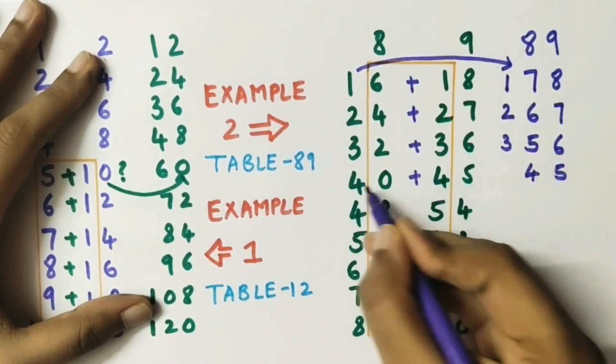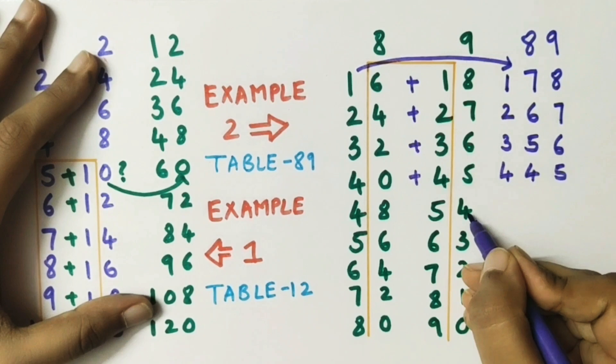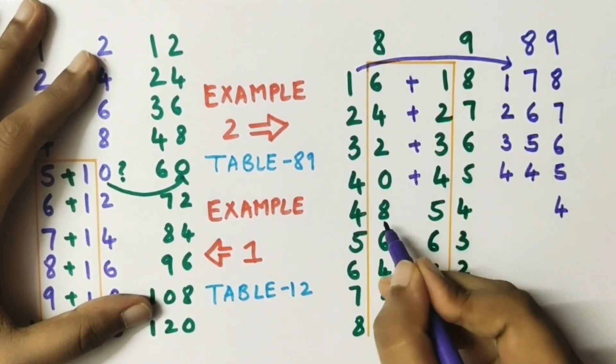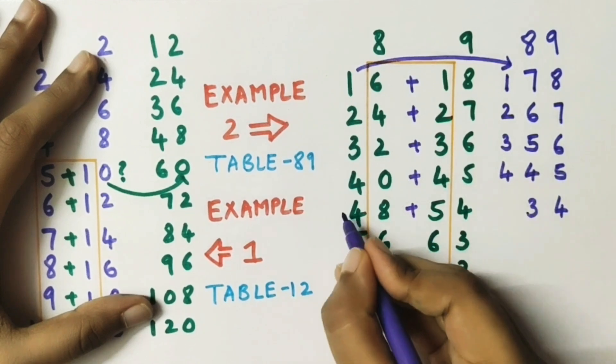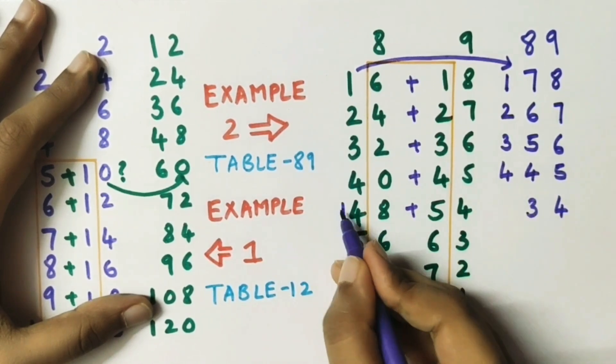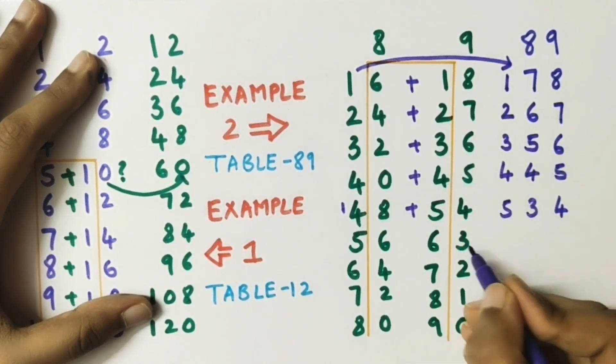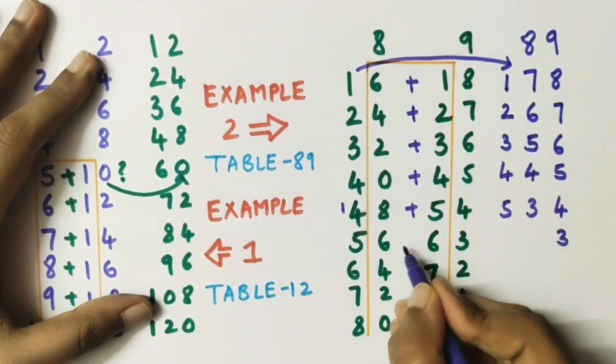Now here, 8 plus 5 is 13, so we write 3 here, carry 1. 4 plus 1 equals 5. We will apply this trick throughout the table.